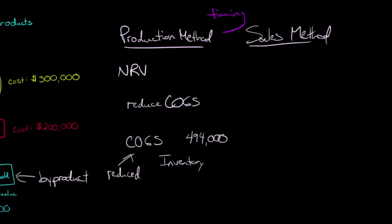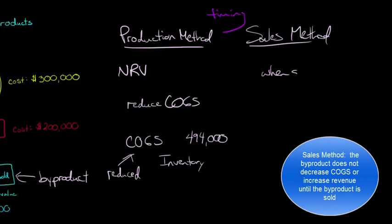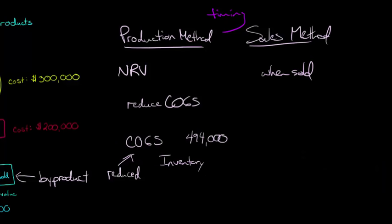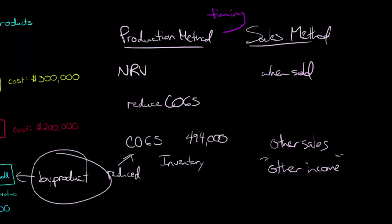But basically, what you could do is you could sell this and recognize it when sold, recognize byproduct when sold, and it could also go to something like, instead of reducing your cost of goods sold, it could go to something like other sales, or you might see it in other income. Sometimes you see something on an income statement that says other income, and you're wondering, what is in this account? Well, it might be that there were some byproducts that were sold.